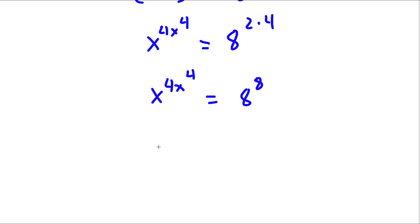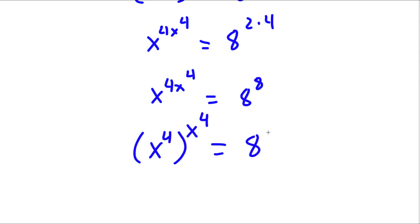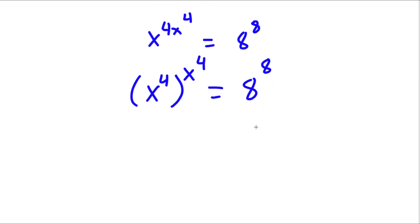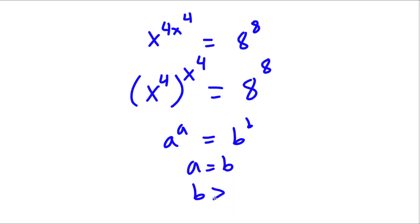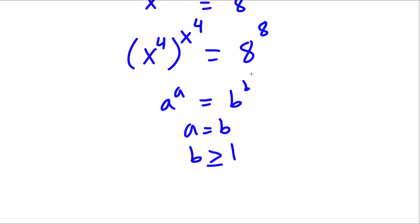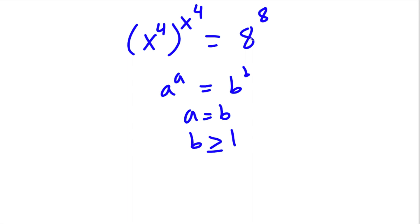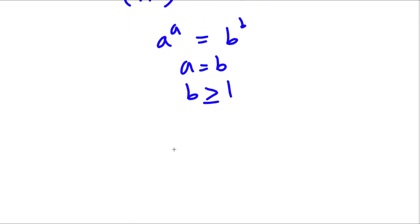Now, x to the power of 4x to the power of 4, I can rewrite as x to the power of 4 to the power of x to the power of 4, and this is equal to 8 to the power of 8. Now, if I have something in the form a to the power of a is equal to b to the power of b, then this means that a is equal to b, as long as b is greater than or equal to 1. And in this case, b is 8, which is greater than or equal to 1, meaning x to the power of 4 is equal to 8.